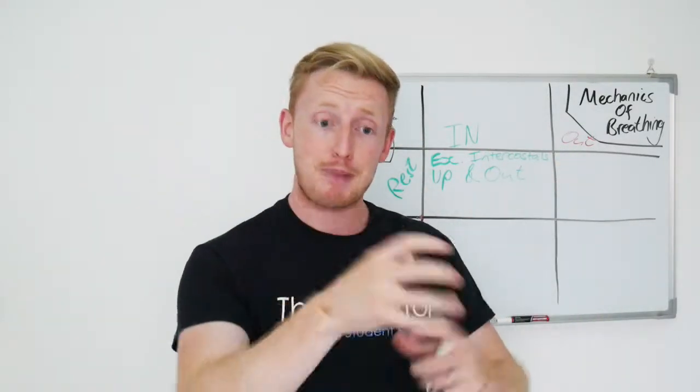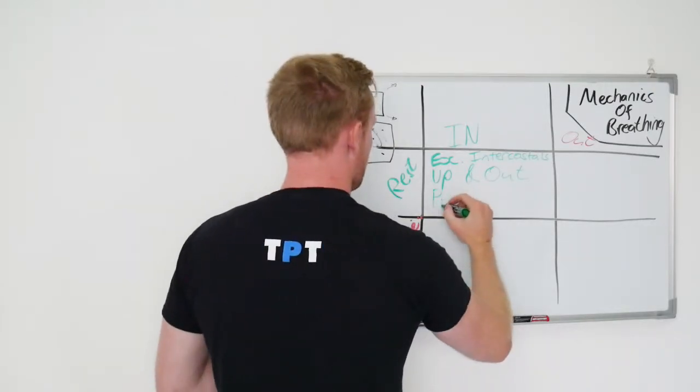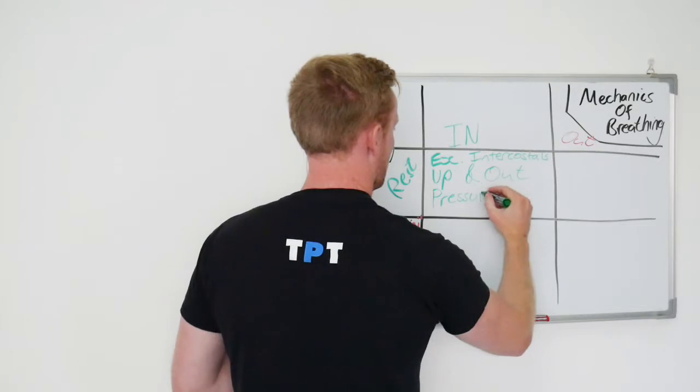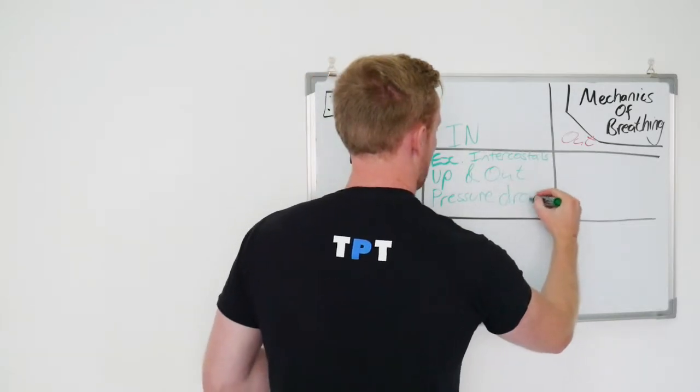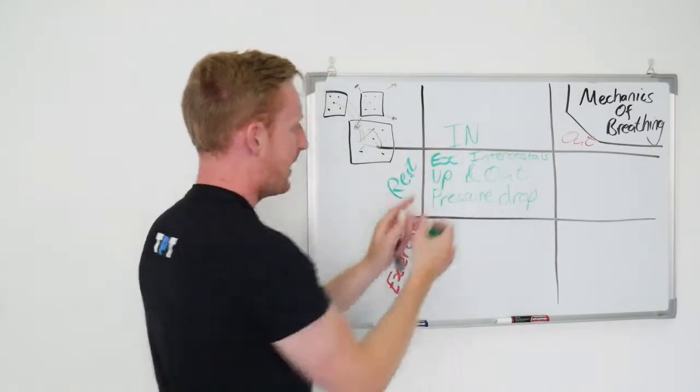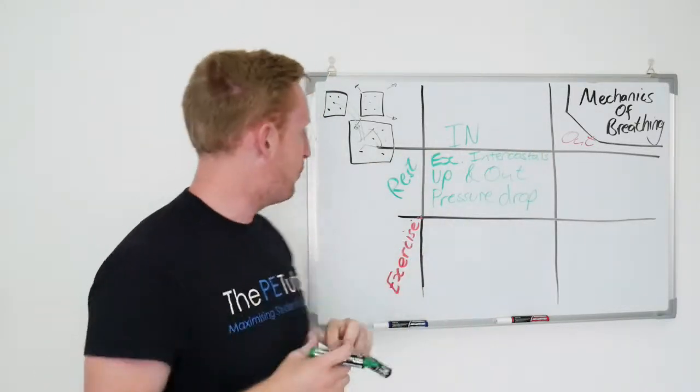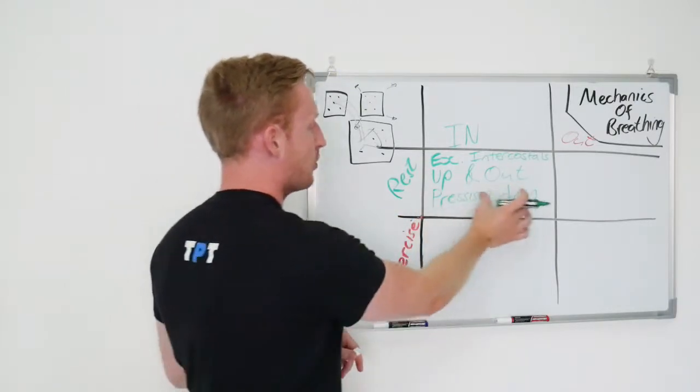And by expanding the space, that's going to cause the pressure to drop. Pressure drop, which is going to invite the air in. So resting inhalation, you've got the external intercostals lifting the rib cage upwards and outwards, leading to a pressure drop.